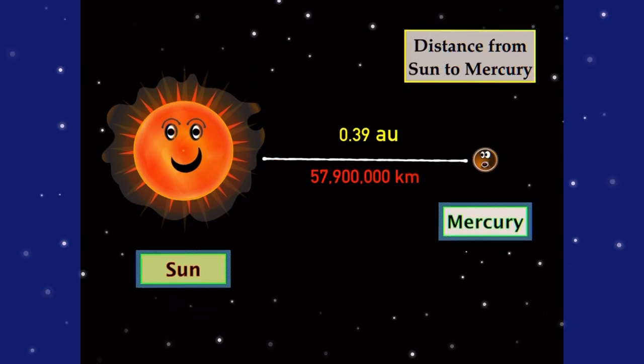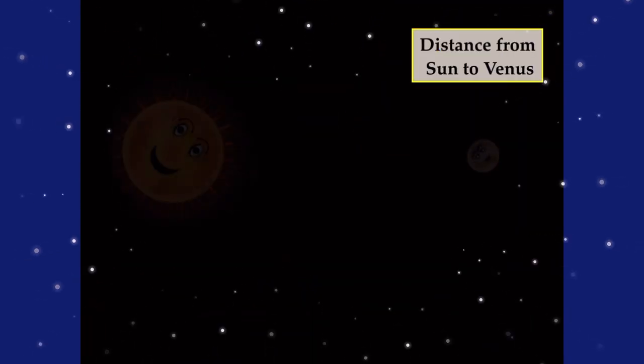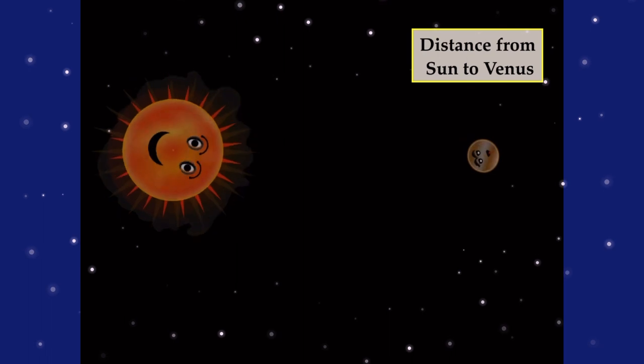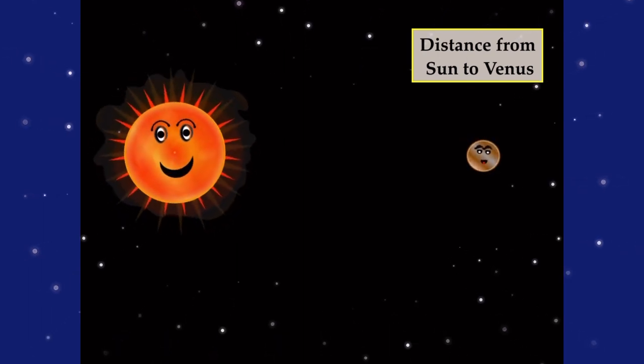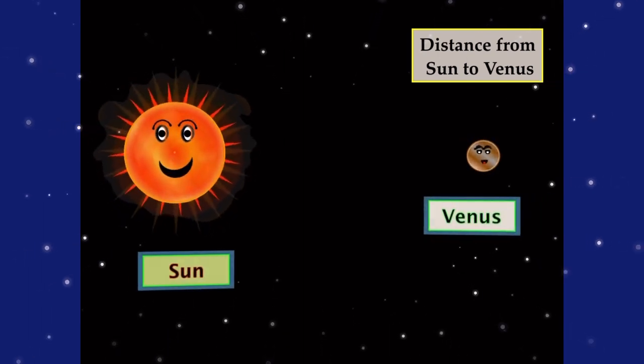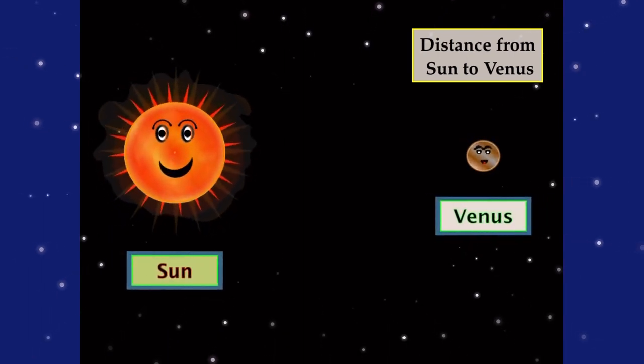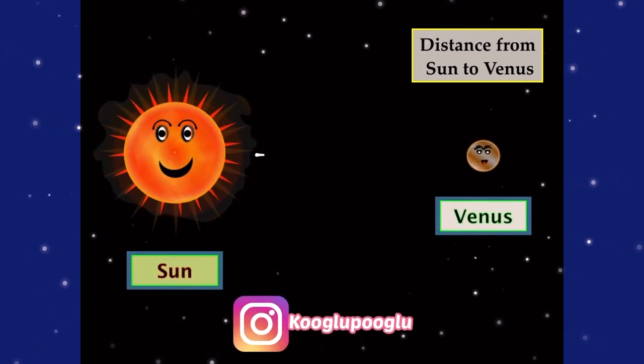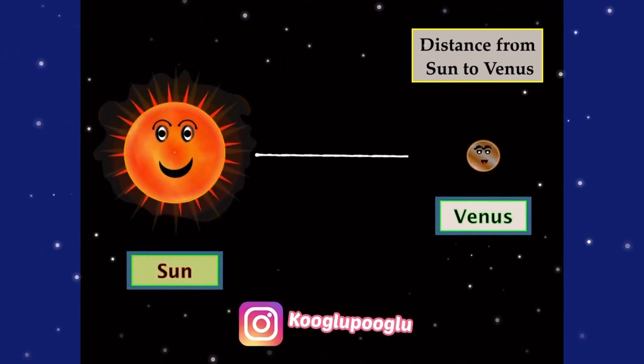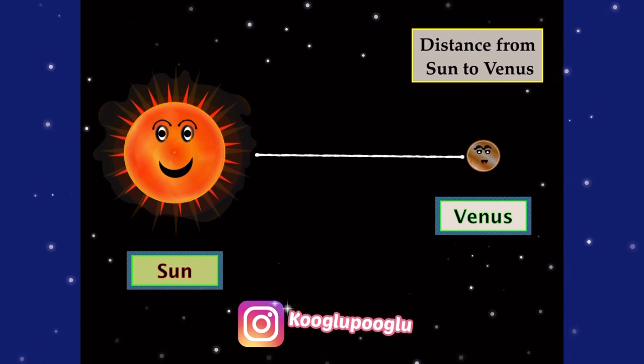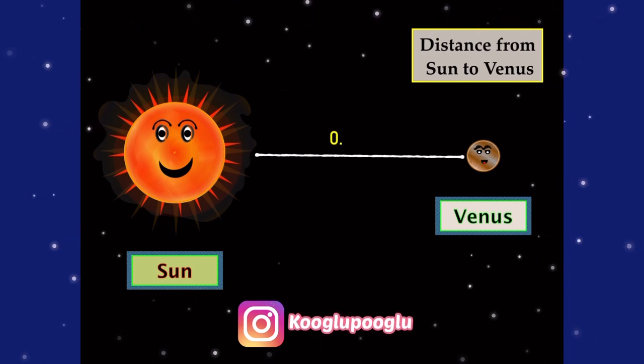Then we got the distance from the Sun to Venus. Venus is also known as the brightest planet and Earth's sister planet, and that is 0.72 AU.